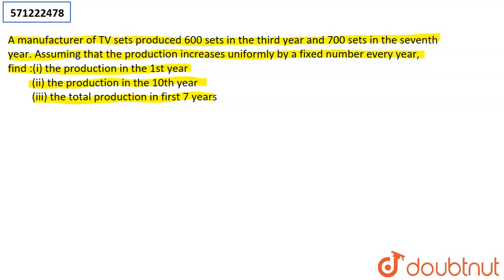Before we begin dealing with this problem, let us assume that the production in the first year was A. Now, pay attention to this second statement. I am given that the production increases uniformly by a fixed number every year.